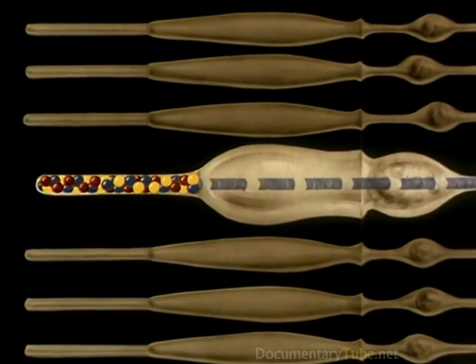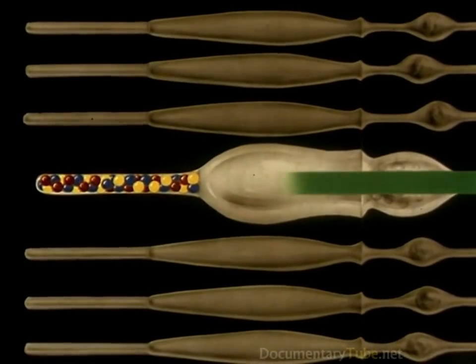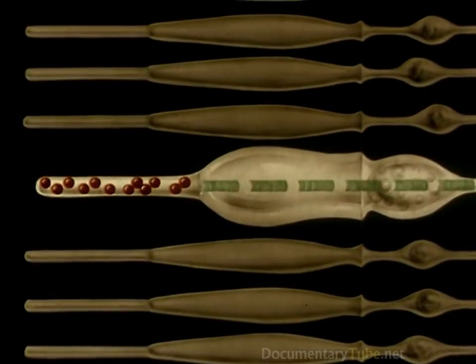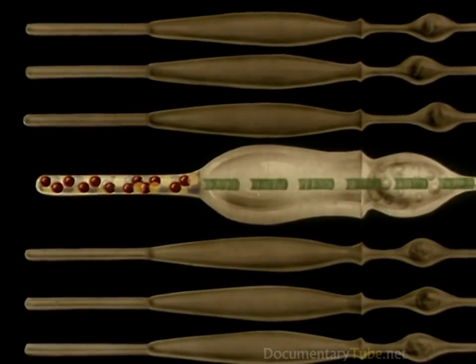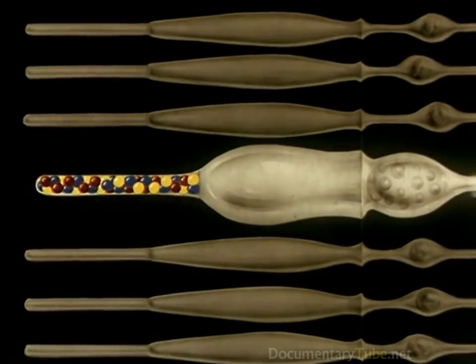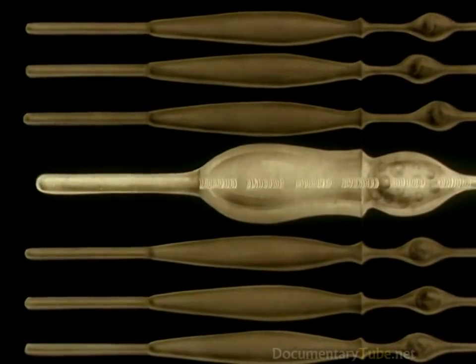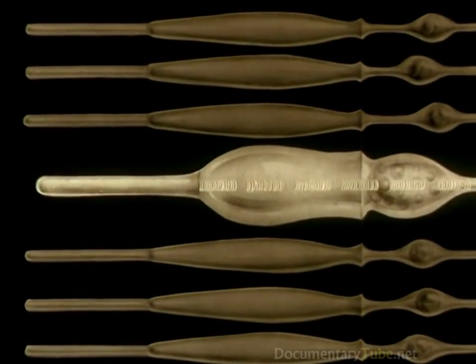However, the cones do even more, for they can create a corresponding nervous current for any and all colors by a combination of their sensitive chemical substances. When all three substances are broken down at the same time, we get a combination of all three colors, which we see as white light.